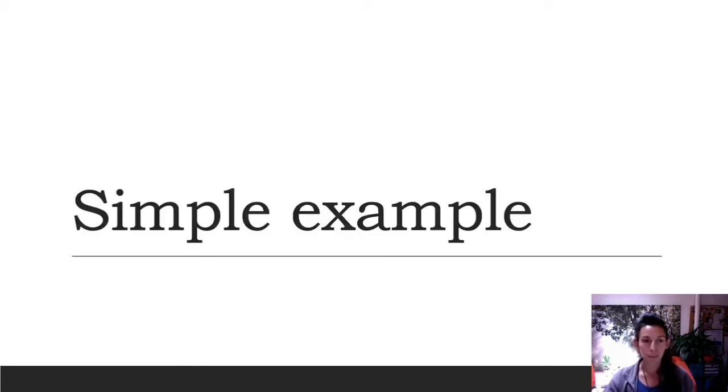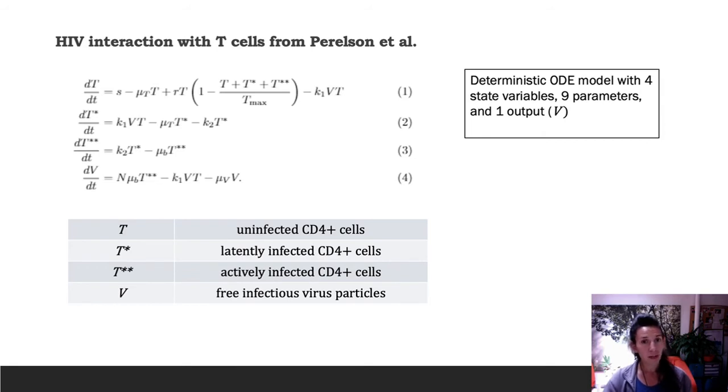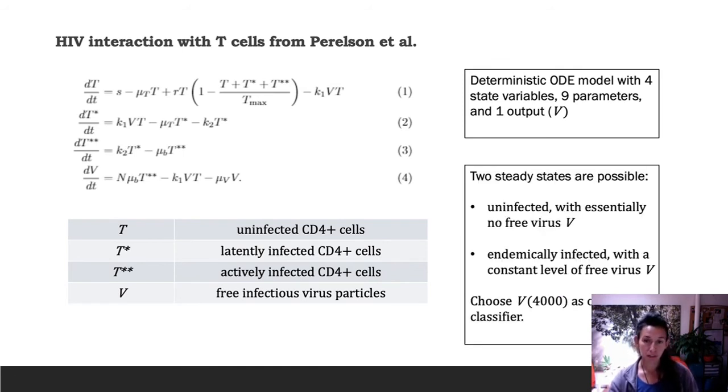I want to go through a very small, simple example of how we would do this in practice. In this example, we're using a model of HIV interaction with T cells developed by Perilsen et al. that has four state variables: uninfected, latently infected, and actively infected T cells, and then free infectious virus particles. This is a deterministic ODE model with nine parameters. One output of interest that we're going to look at here is the free virus particles. In this model, there are two steady states possible: either the uninfected state with essentially no free virus, or the endemically infected state with a constant level of free virus.